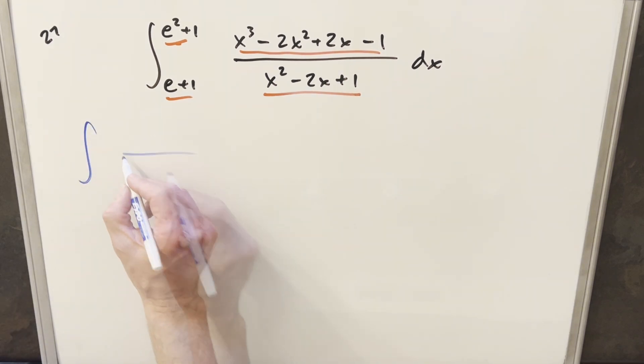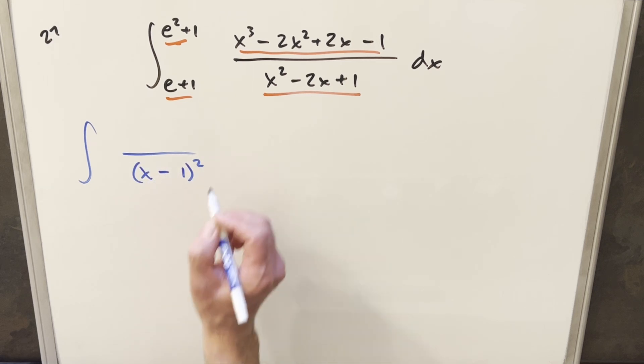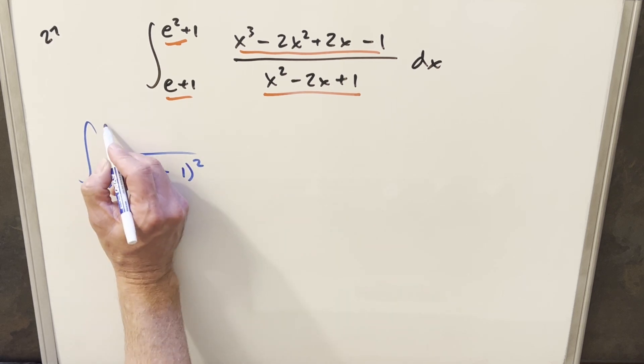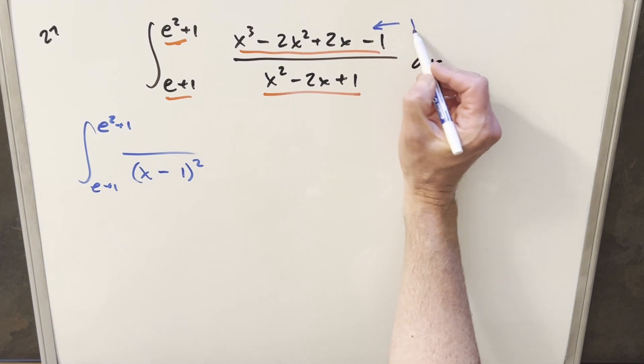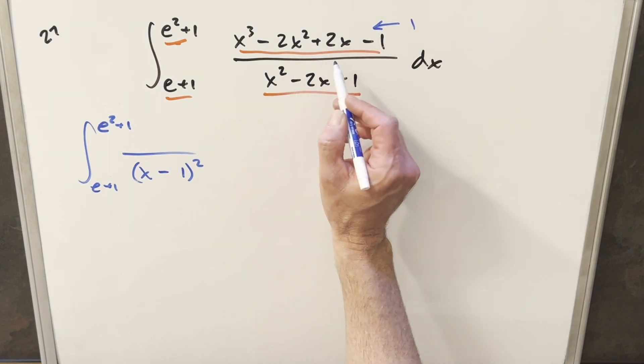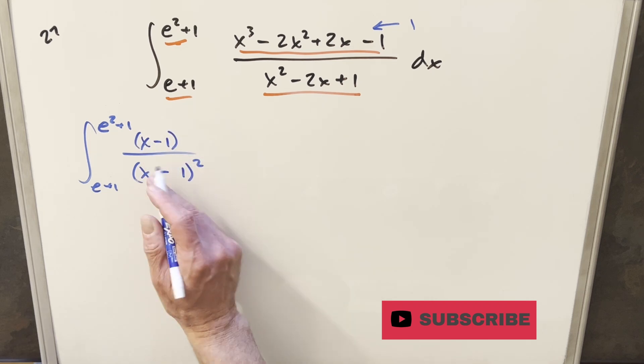So starting with the denominator on this, this is actually a perfect square. This here is, I can write as x minus 1 squared, and then we'll keep our bounds on this. And then the numerator is a little more complicated, but just notice that 1 is going to be a root to this. If you just plug in 1 into this, you're going to get 0. So we can at least know that this is going to factor as x minus 1.